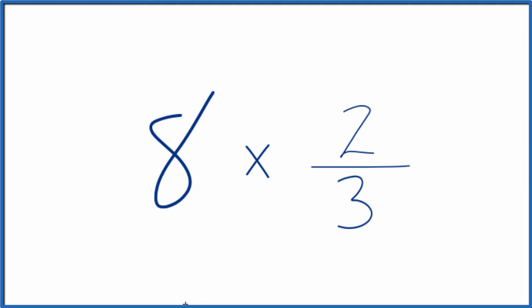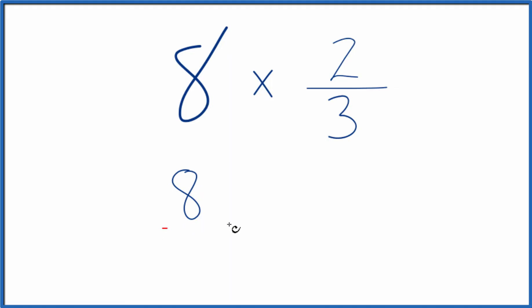A better way to do it might be to think about this as 8 over 1. 8 divided by 1, that's still 8. We're just dividing by 1. Now we have a fraction. We can multiply that fraction times 2/3.